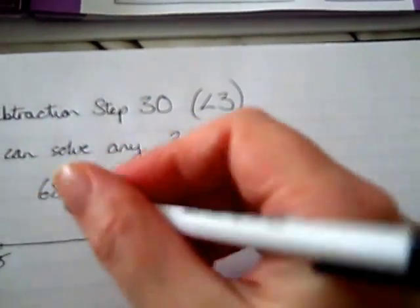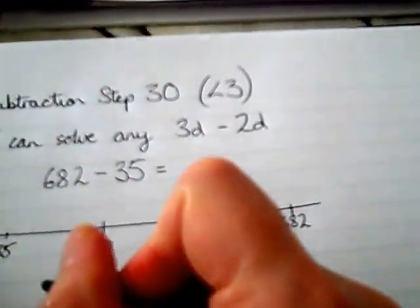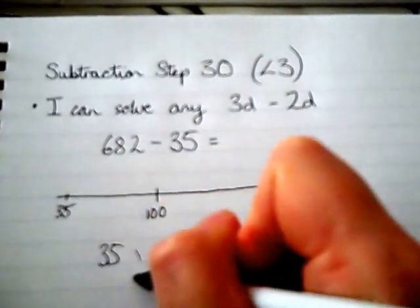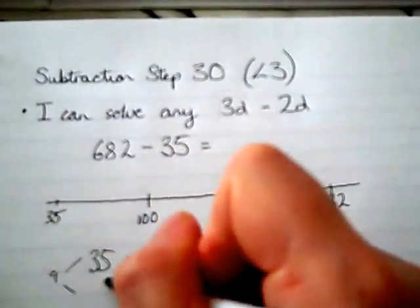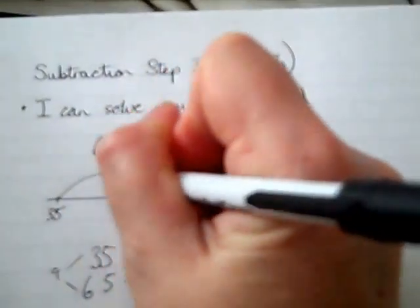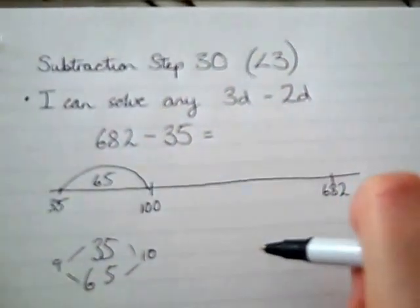So we're going to jump from 35 to 100, and we can do that because of our jigsaw numbers. So if we remember, this side adds up to 10, this side adds up to 9. So 5 and 5 makes 10, 3 and 6 makes 9, so I know that I would have to jump 65 to get from 35 to 100.